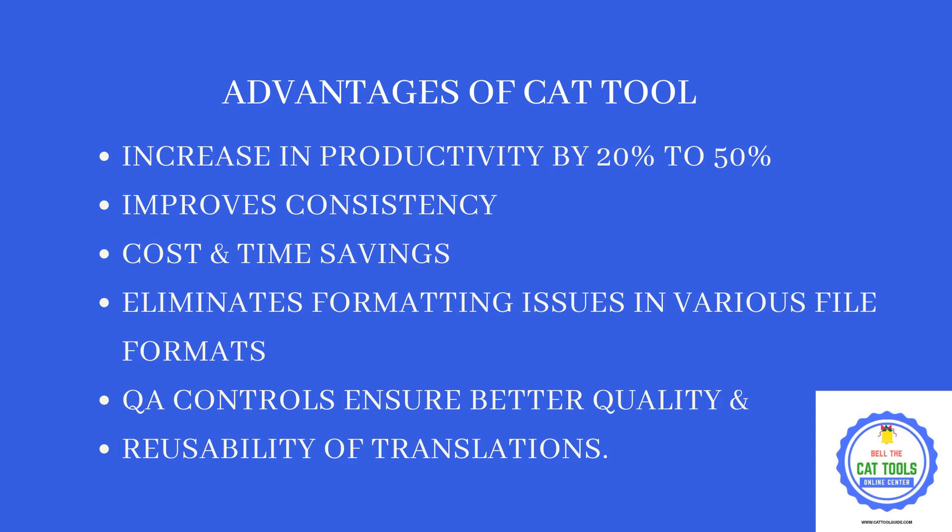A CAT tool improves your consistency. For example, if there are repetitive texts, if you translate in one manner at the first occurrence, the remaining occurrences will be automatically filled by the CAT tool. So your consistency will improve, and by saving typing efforts and time, you are also able to save time in case of repetitive text.